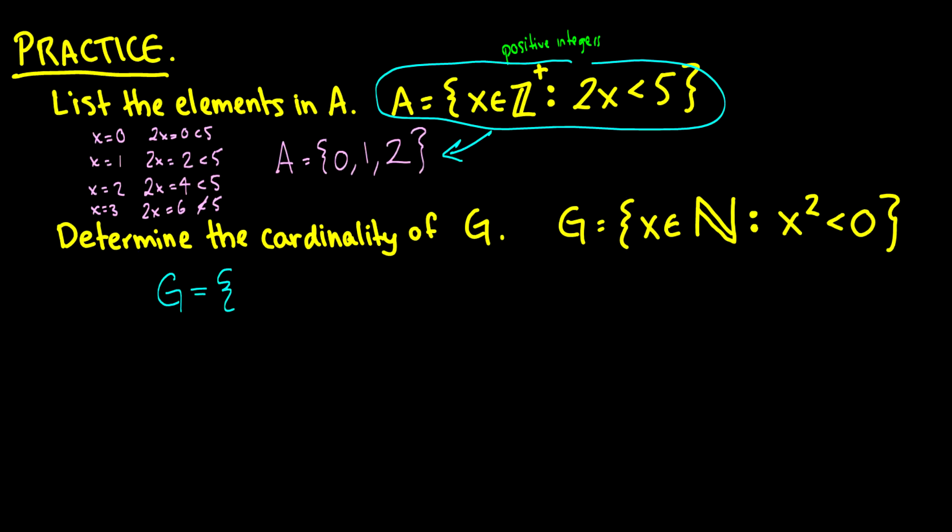So let's take the first natural number 1, and let's square it. Is that less than 0? No. Okay, so 1 is not in there. 2, well 2 squared is also not less than 0.